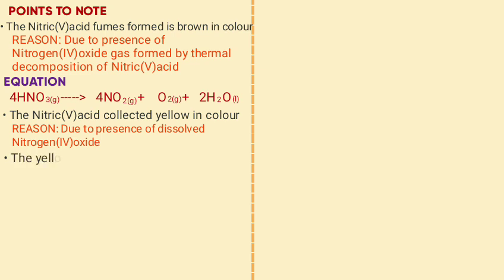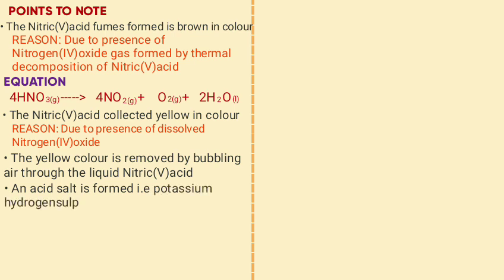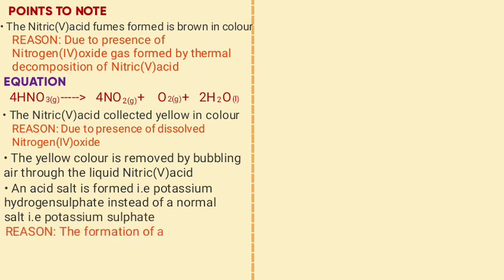The yellow color is removed by bubbling air through the acid. An acid salt is formed during the preparation of nitric acid instead of a normal salt, which would be potassium sulfate. The reason is that formation of a normal salt requires a high temperature that cannot be achieved in a classroom situation.